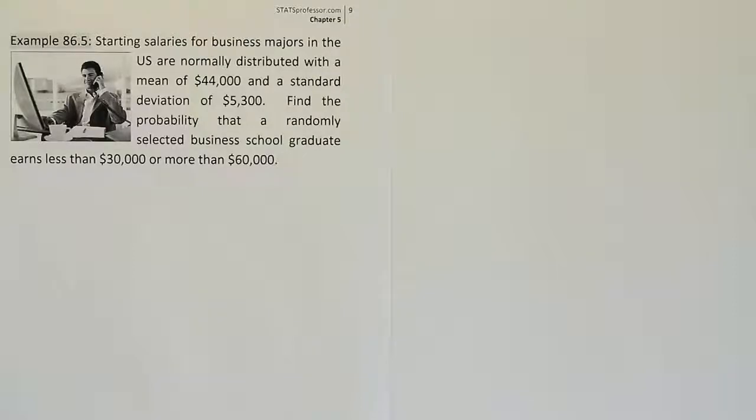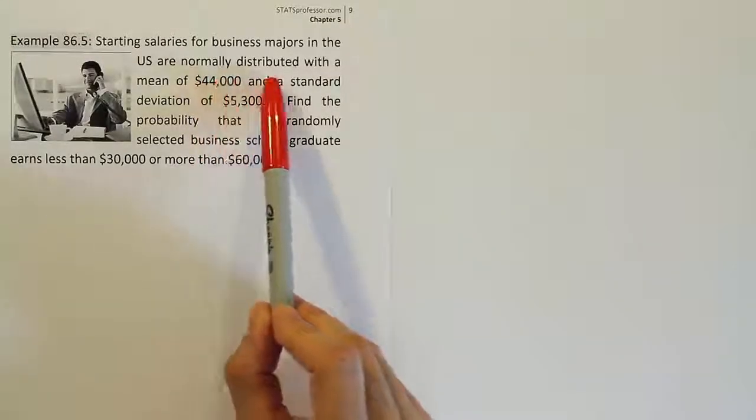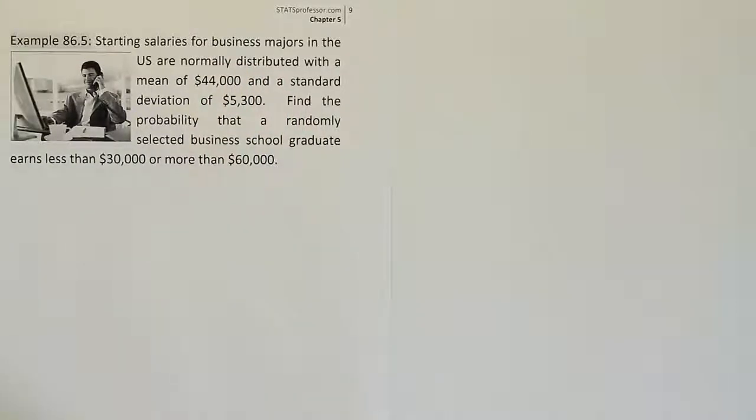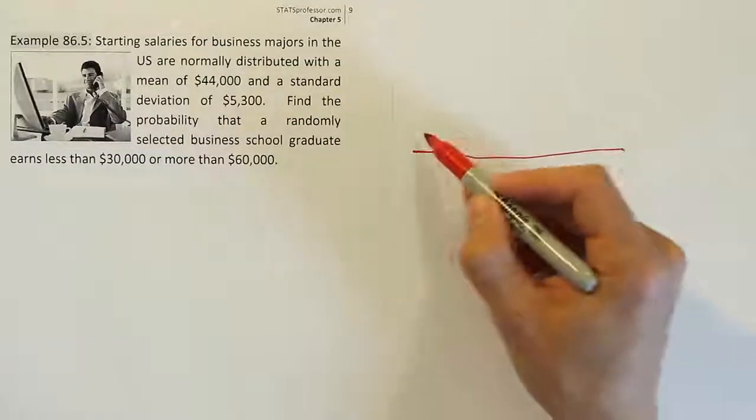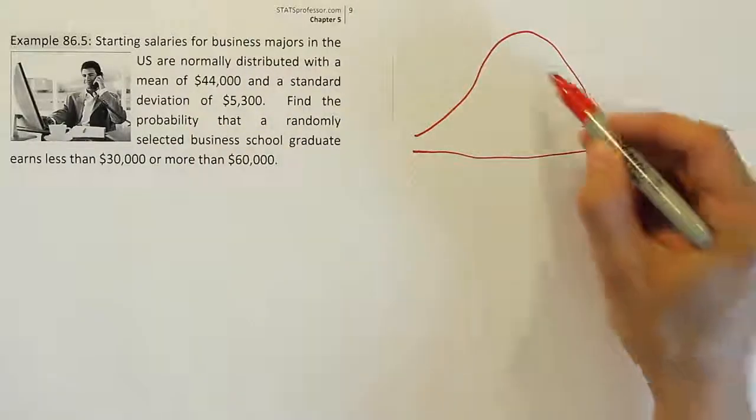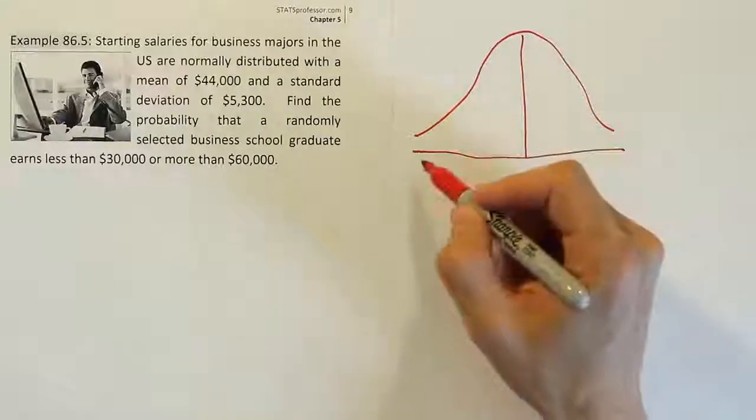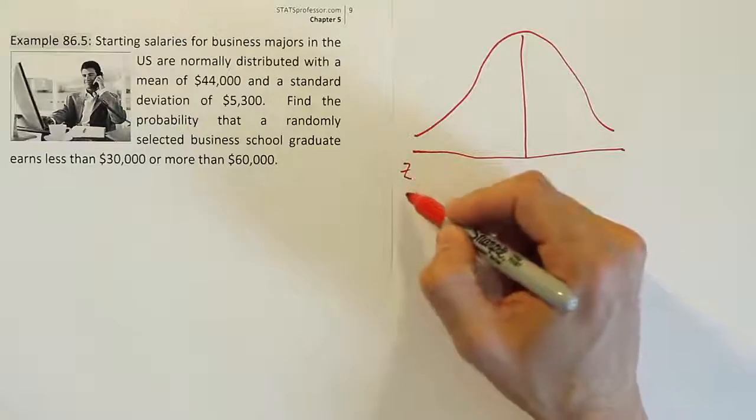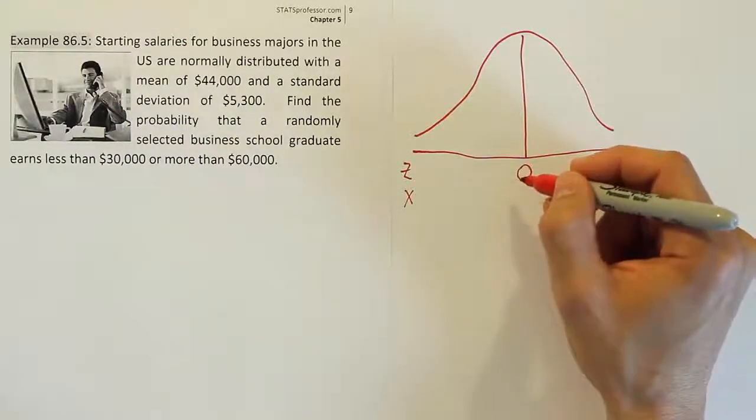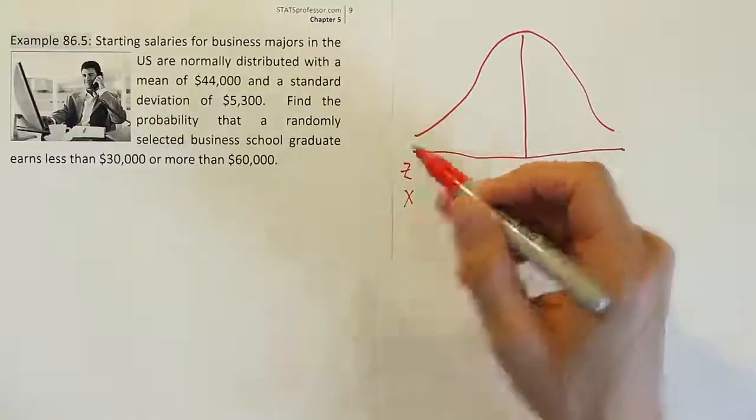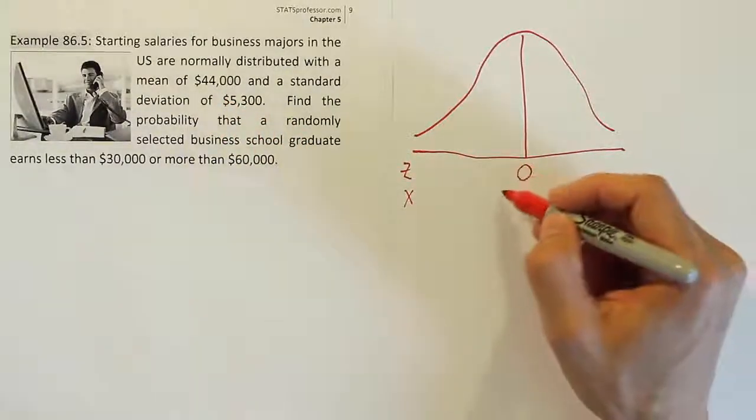Okay, so the problem mentions that the starting salaries are normally distributed. That makes me think of drawing a bell curve, so I'm going to go ahead and draw that. I'll label, as always, a Z-axis and an X-axis. The Z-axis will be centered at 0, and the X-axis will be centered at the mean for the problem, which is $44,000.